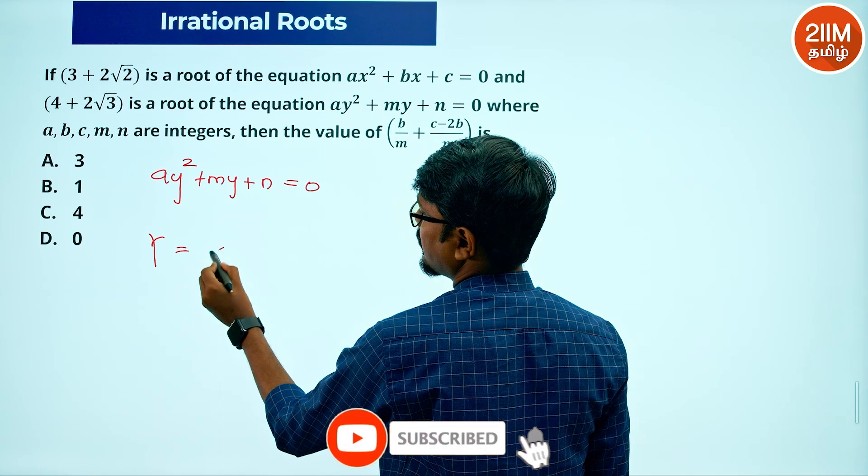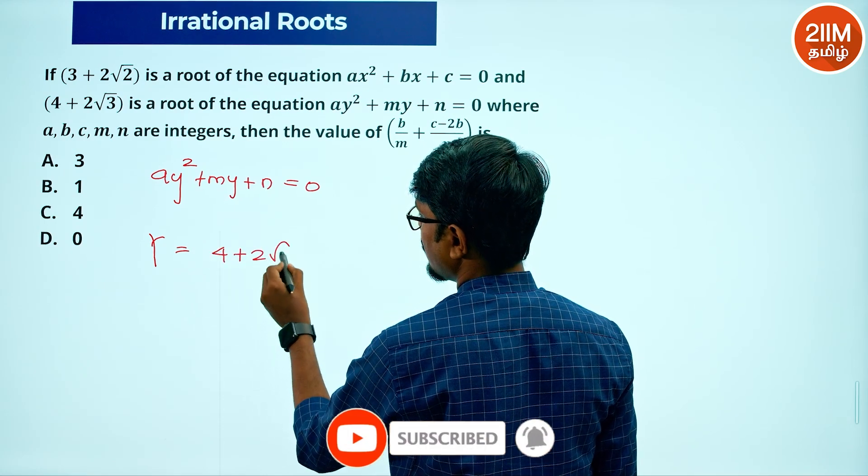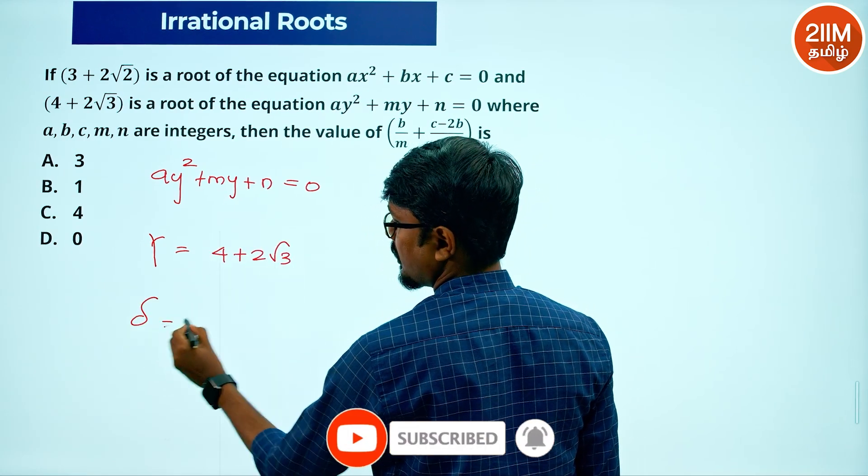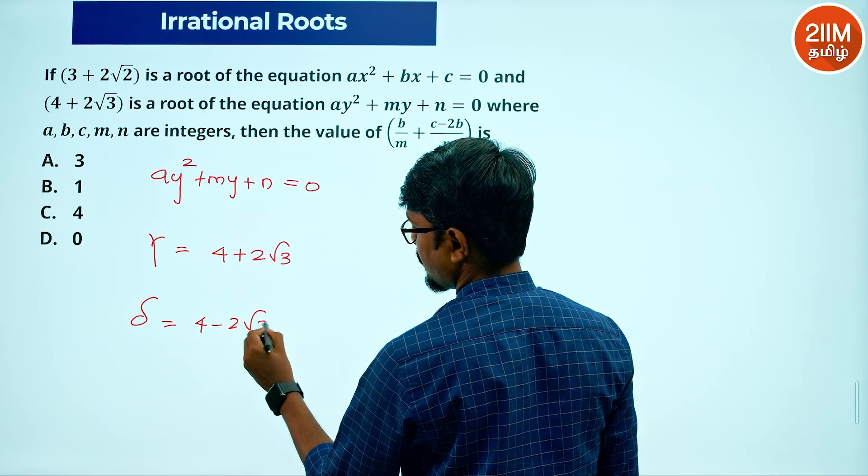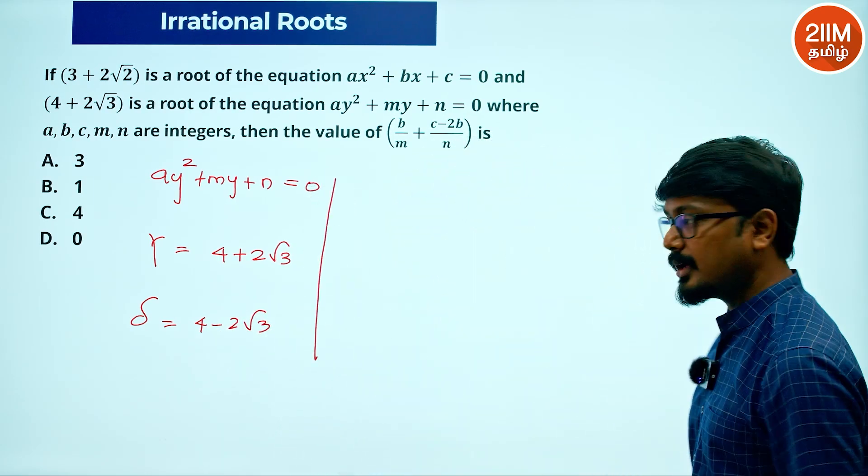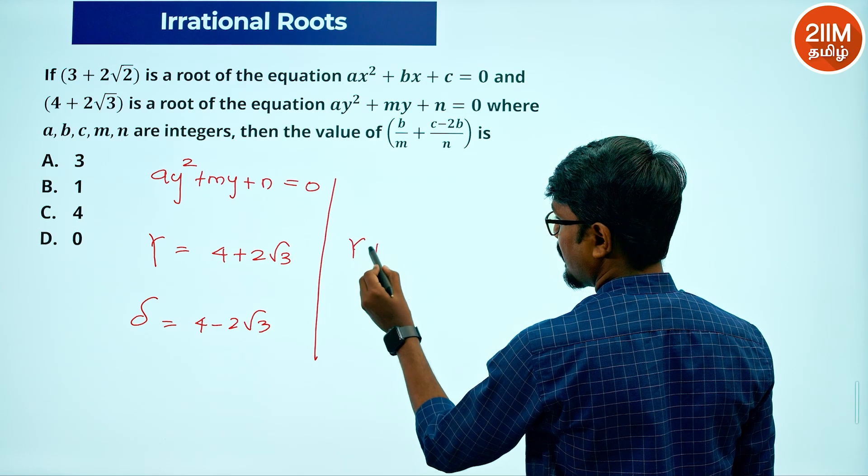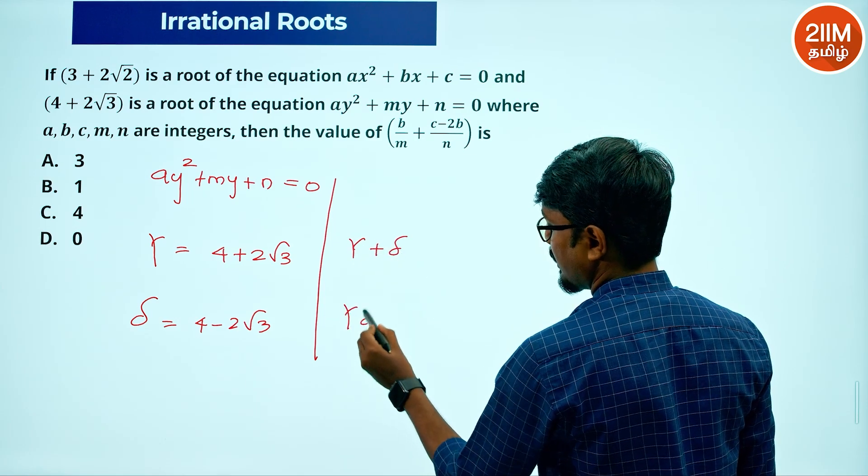For this equation, the root given is 4 plus 2 root 3. So delta, the other root, will be 4 minus 2 root 3. Same process: gamma plus delta and gamma delta.